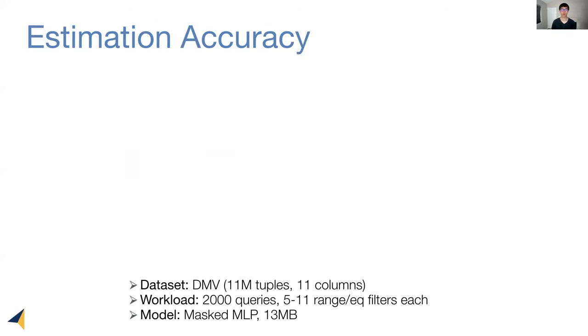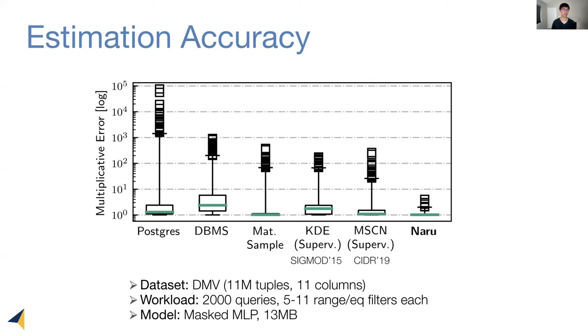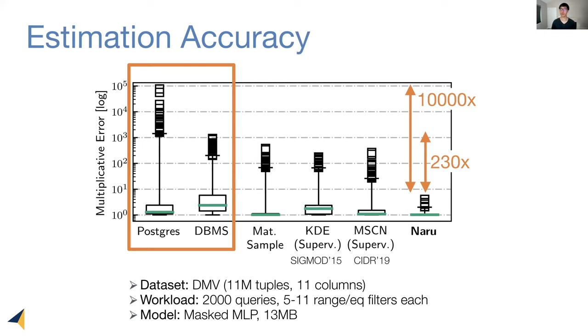Now we evaluate Naru's estimation accuracy on this DMV dataset with 11 columns. We generate a challenging workload containing a variety of range and equality filters. Here, I'm going to show on the y-axis the multiplicative error or the Q error in log scale. Compared to Postgres and the commercial database, Naru is two to four orders of magnitude more accurate. The reason is these systems use histograms and heuristics, while Naru avoids them.